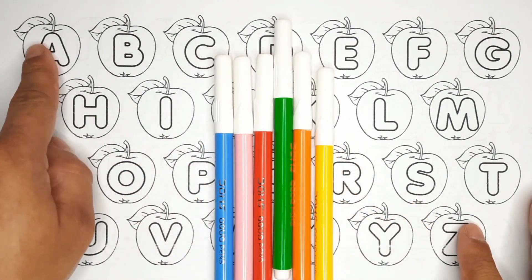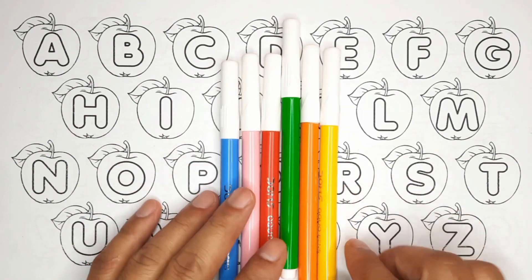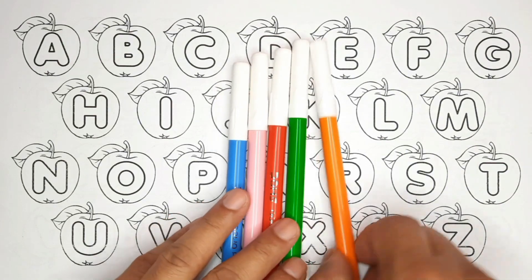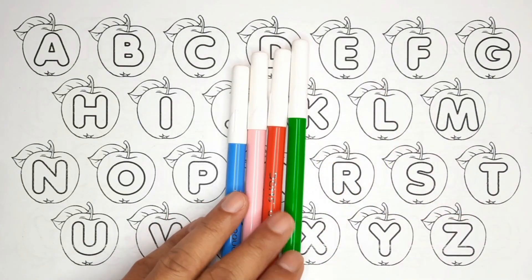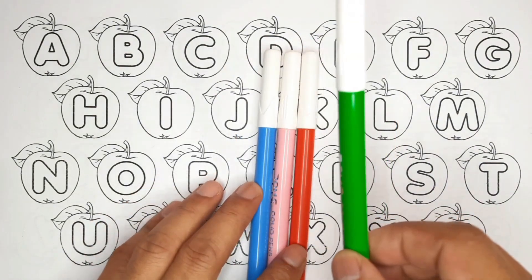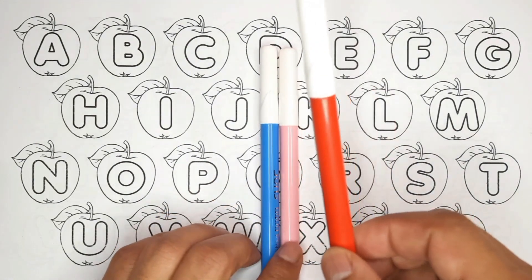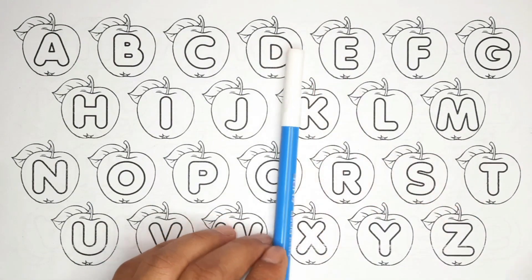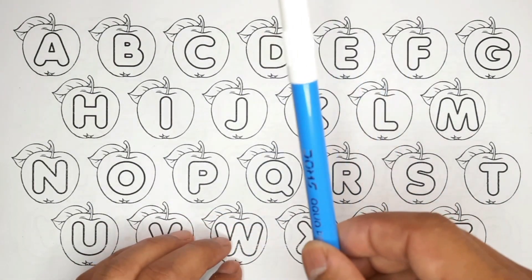So before we start the video, let's learn the name of colors: yellow color, orange color, green color, red color, pink color, blue color.